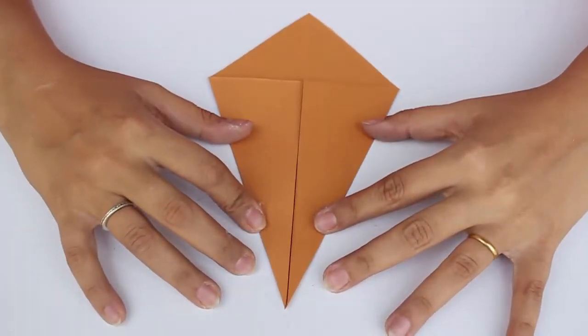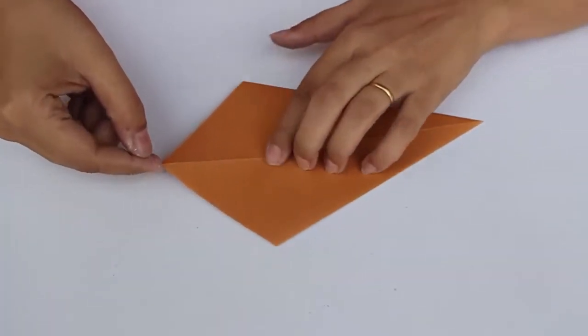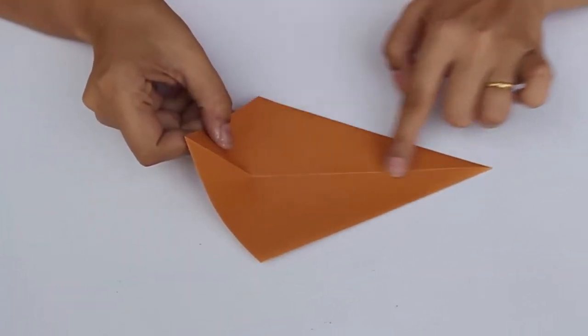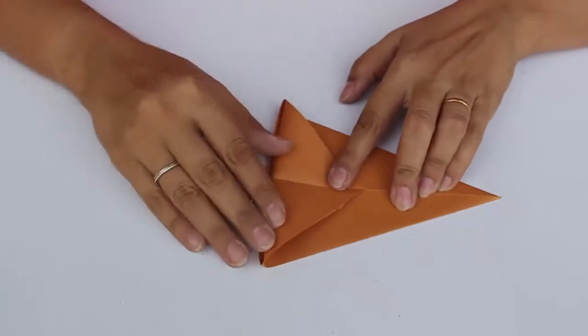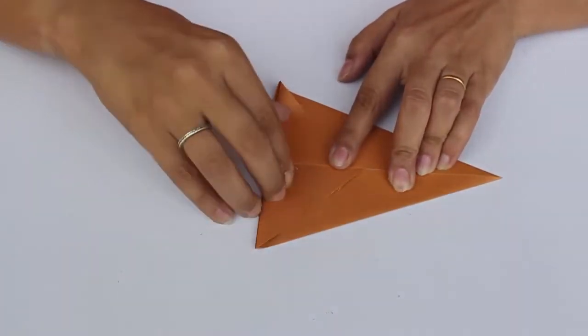Once the ice cream cone or the kite is made, turn the paper over. Here, get this flap to go backwards on the spine of the paper like this, till this becomes an isosceles triangle like this.